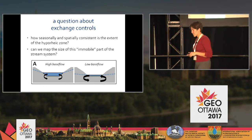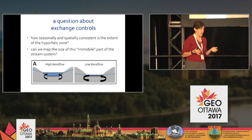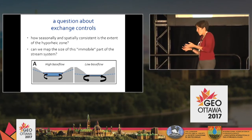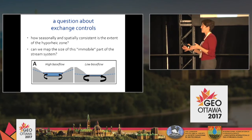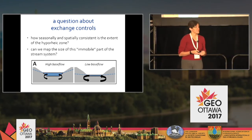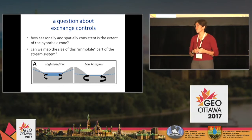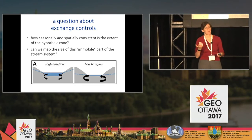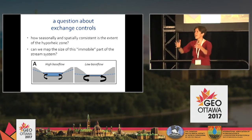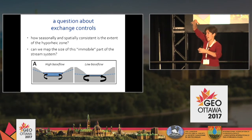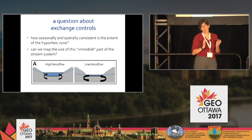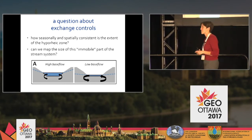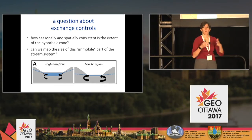Just like in the groundwater system, there are two important parameters for hyporheic zone studies: alpha, the mass transfer rate of solutes between the stream and the hyporheic zone, and instead of immobile porosity, the area of the hyporheic zone. My colleague Mike Gusev and I, when we were both at Penn State, were talking about how important that hyporheic zone is to ecosystem services. The question is: how big is that zone and how does it change seasonally? Our hypothesis was that during times of high base flow, when water tables are high, those high water tables would compress the hyporheic zone, so it would be smaller in spring than in fall when the water table is relaxed.